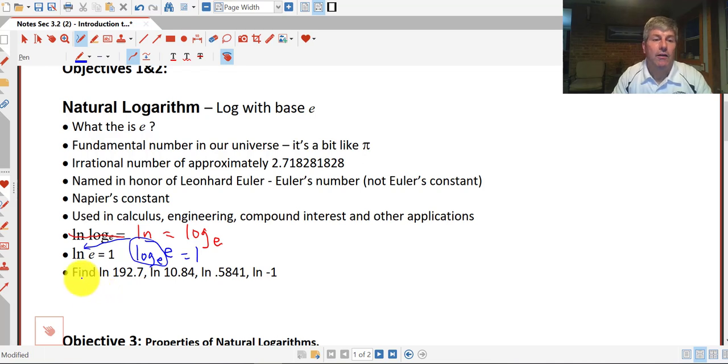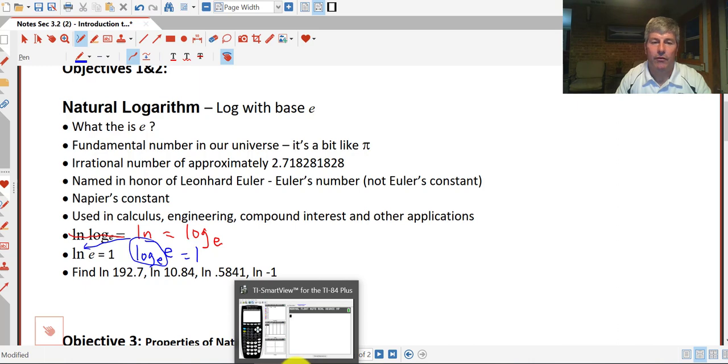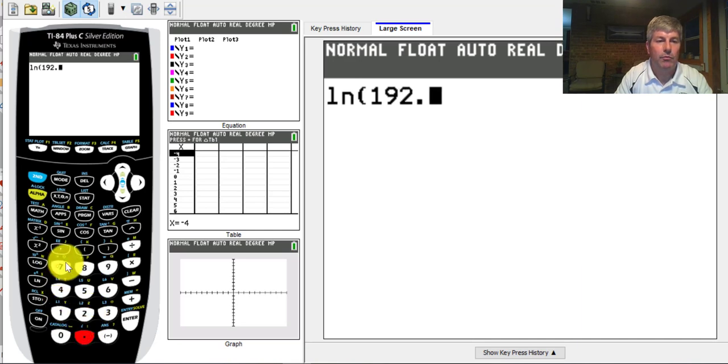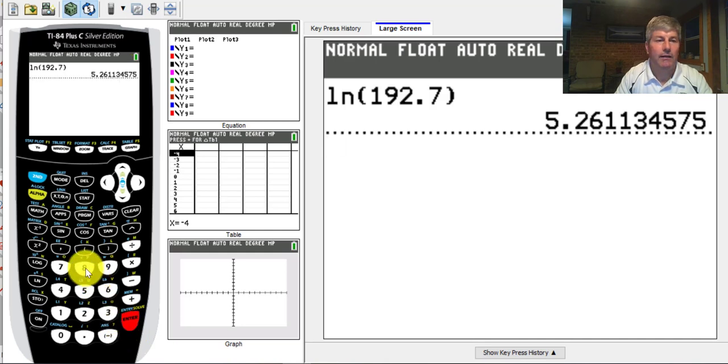Using our calculator, we can find the natural log of 192.7, 10.84, and 0.5841, and we'll give negative 1 a shot as well. There is a natural log key on your calculator. The ln key is that natural log. The natural log of 192.7, we just put that in our calculator and we get 5.26 and change.